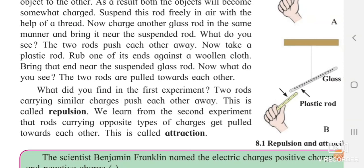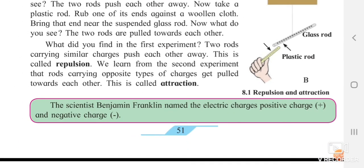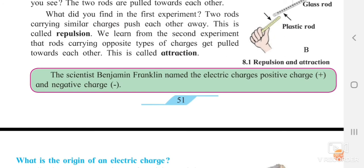In the experiment, when wool was rubbed on a pen, a scale, and a PVC pipe, the pieces of paper were attracted towards those objects. We should understand: when two charges are opposite, there is attraction; when two charges are the same, there is repulsion. The scientist Benjamin Franklin named the electric charge as positive and negative. Positive charge is denoted by a plus sign and negative charge by a minus sign.